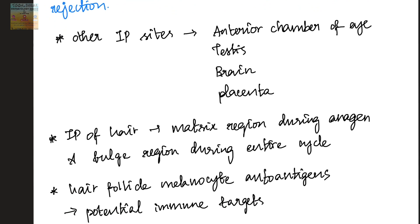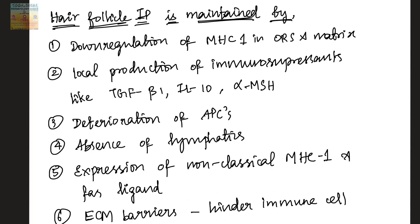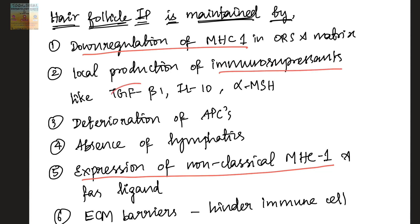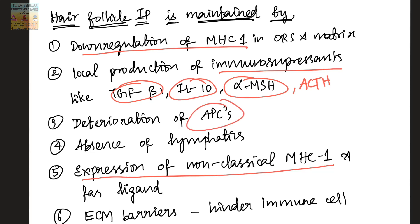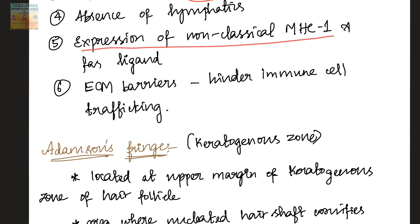This immune privilege of hair is mainly attributed to the matrix region during the anagen phase and the bulge region during the entire cycle of hair. Hair follicle melanocyte autoantigens act as potential immune targets. The immune privilege is maintained by downregulation of MHC class 1, expression of non-classical MHC1, local production of immunosuppressants like transforming growth factor beta-1, interleukin-10, alpha-melanocyte stimulating hormone, and ACTH, which causes deterioration of antigen presenting cells. Additionally, absence of lymphatics along with extracellular matrix barriers hinder immune cell trafficking.